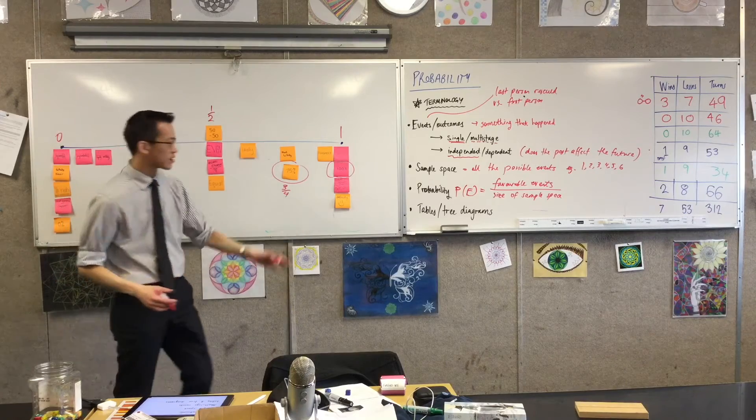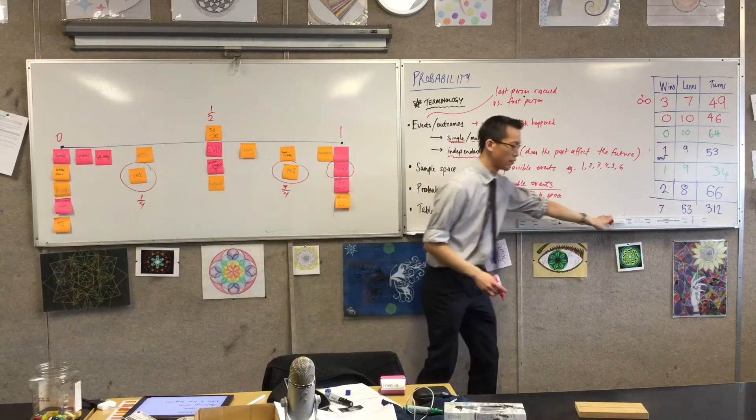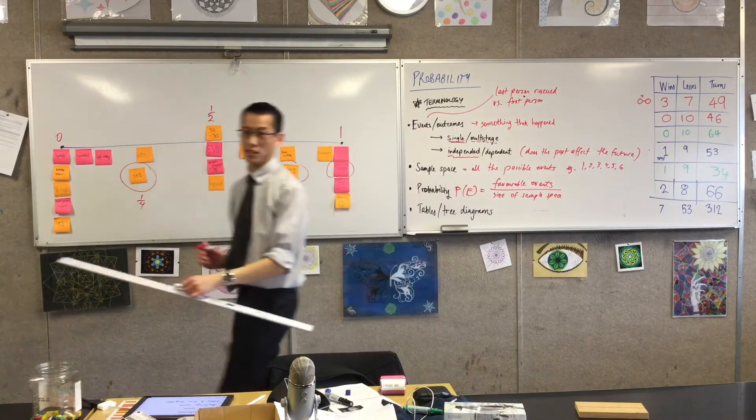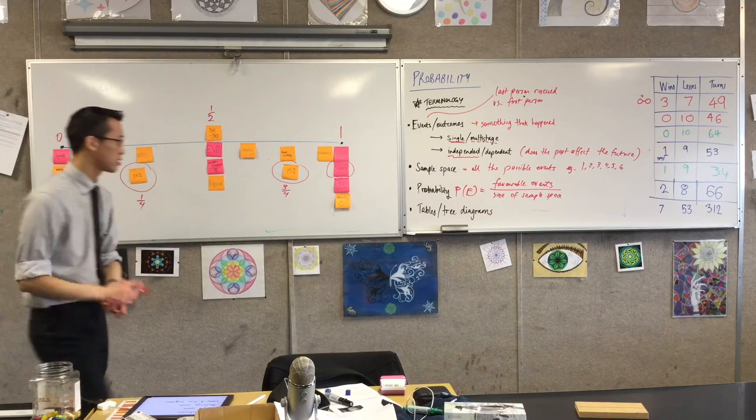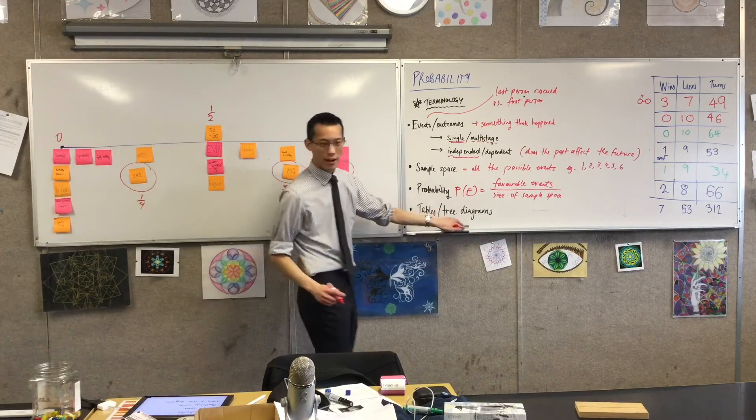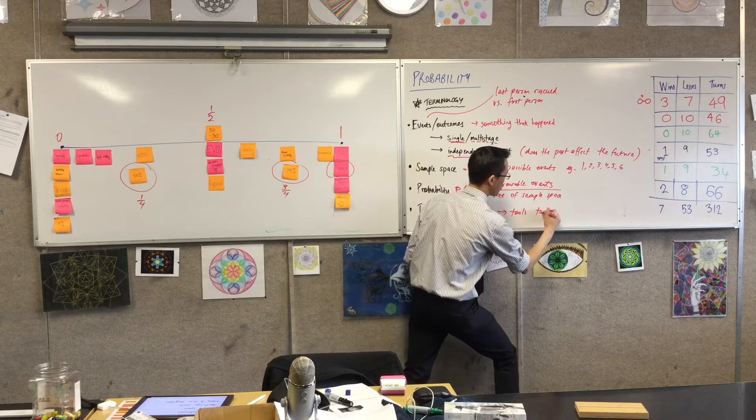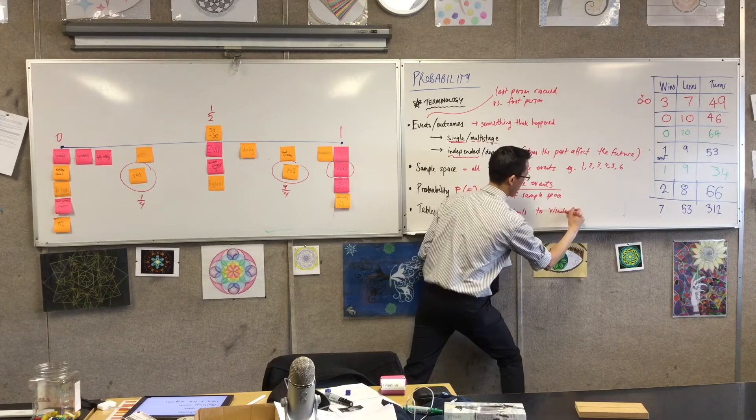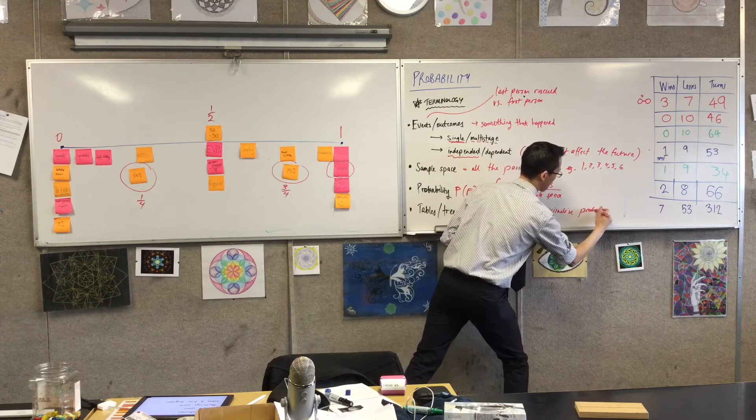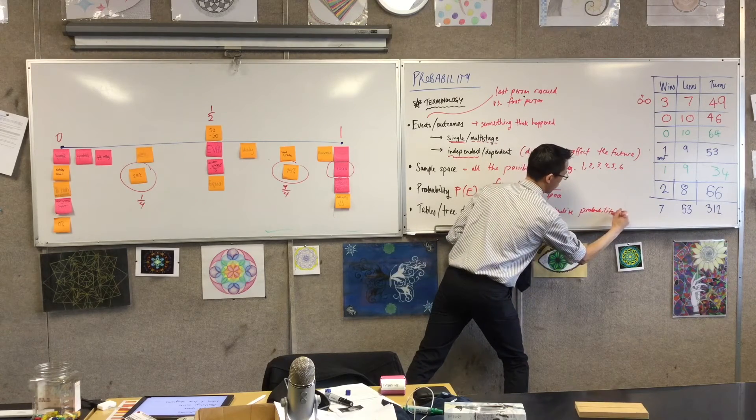Just lastly, I will quickly draw a couple of these for you. You don't have to put too much detail here because you've got some in your text and you're going to draw them yourself. Tables and tree diagrams - they're just tools to visualize what's happening for the probability.